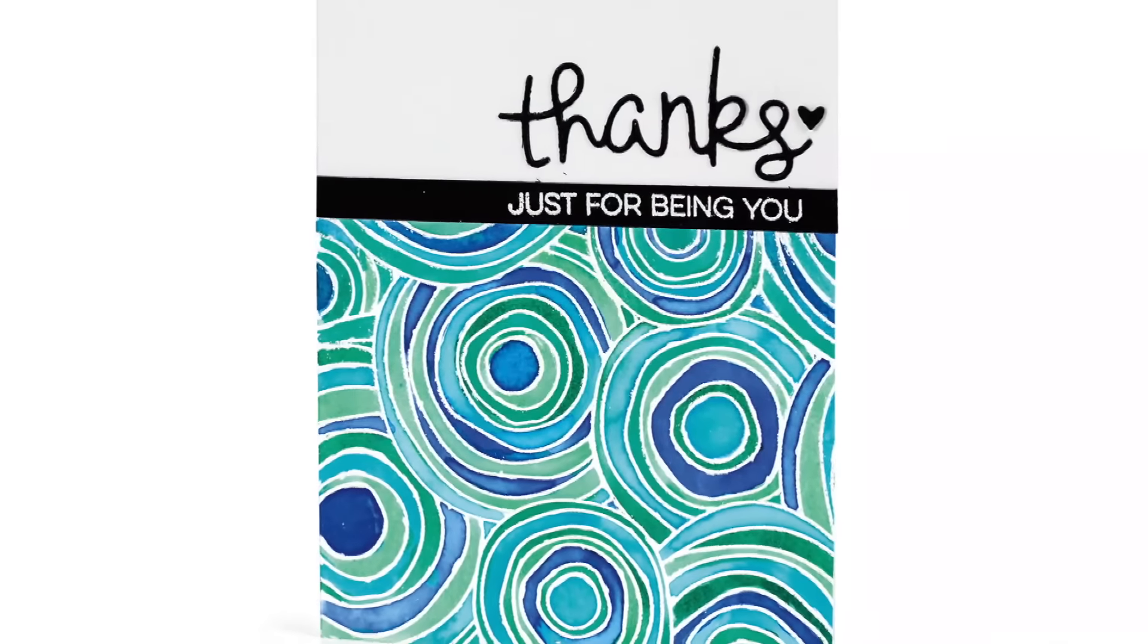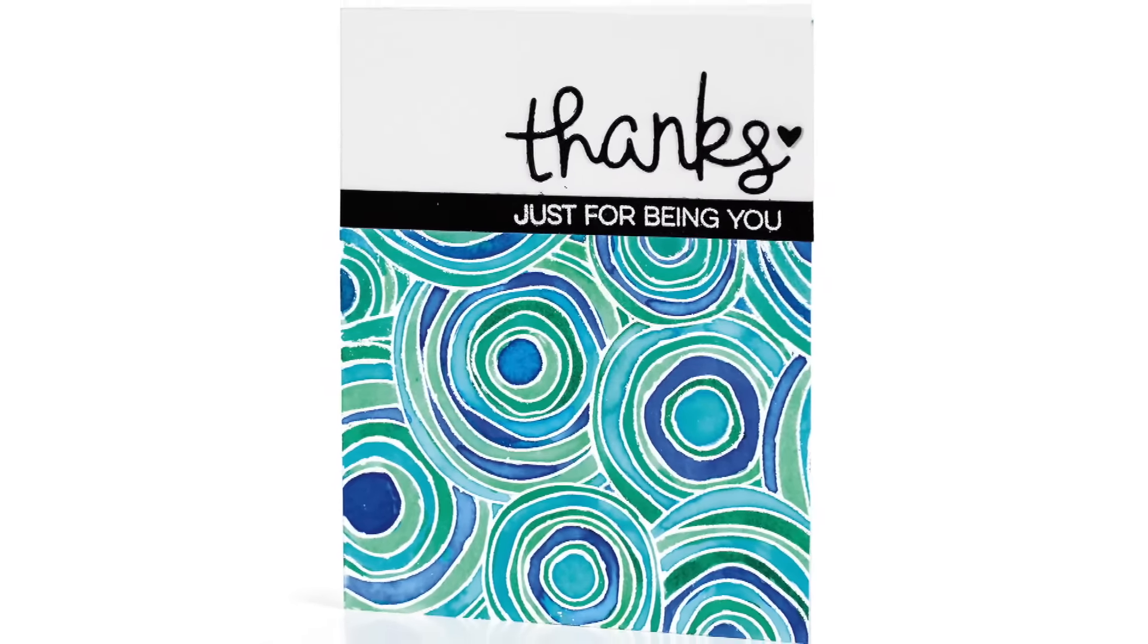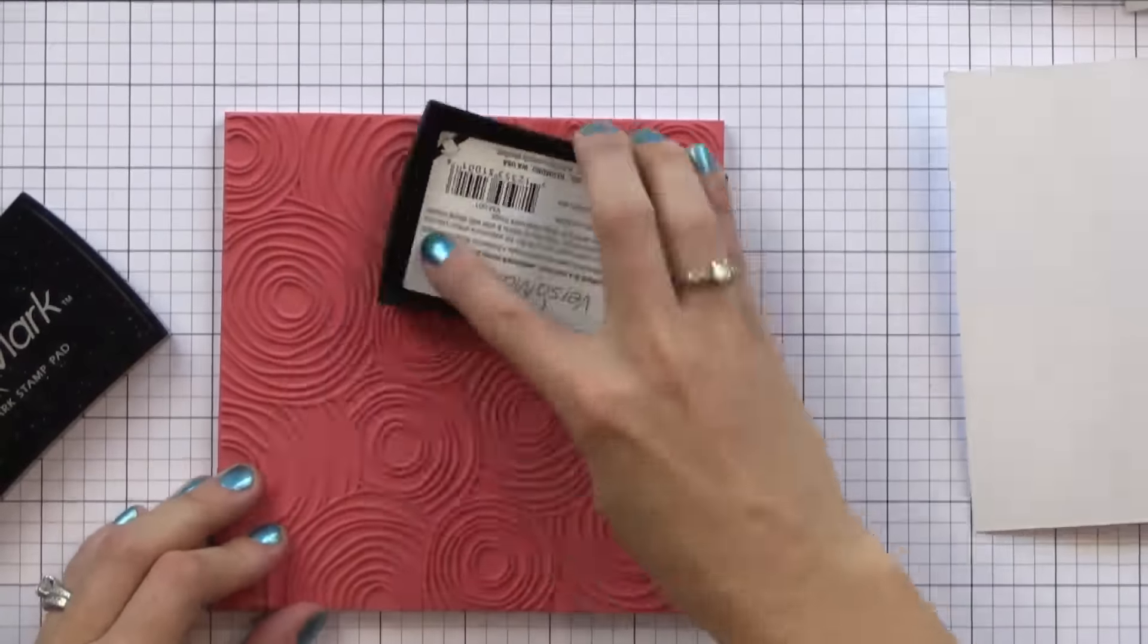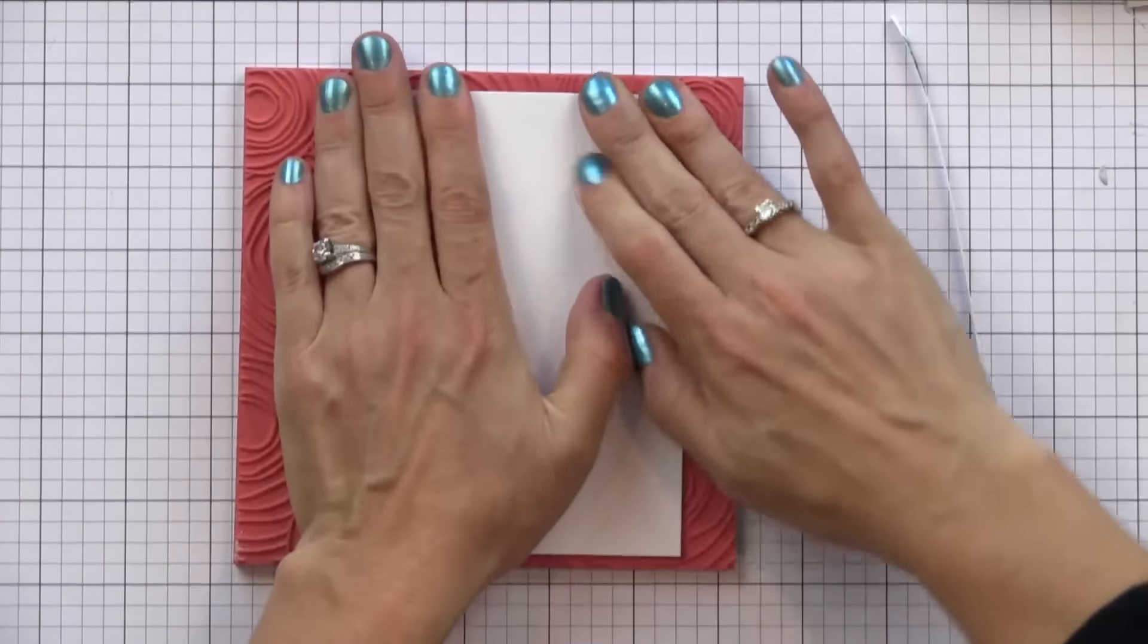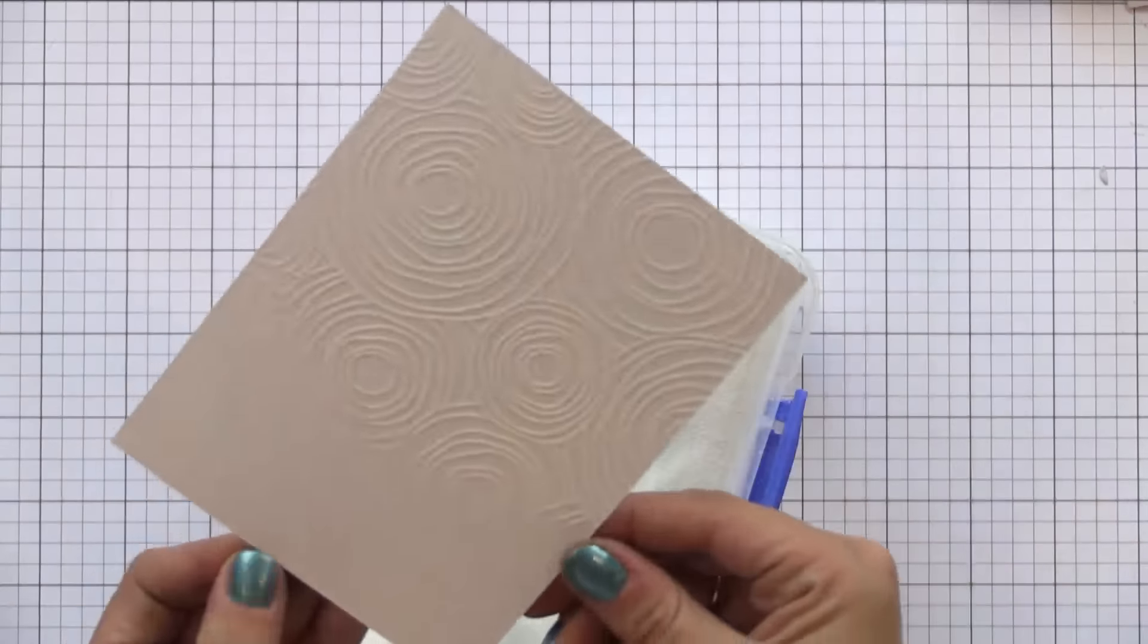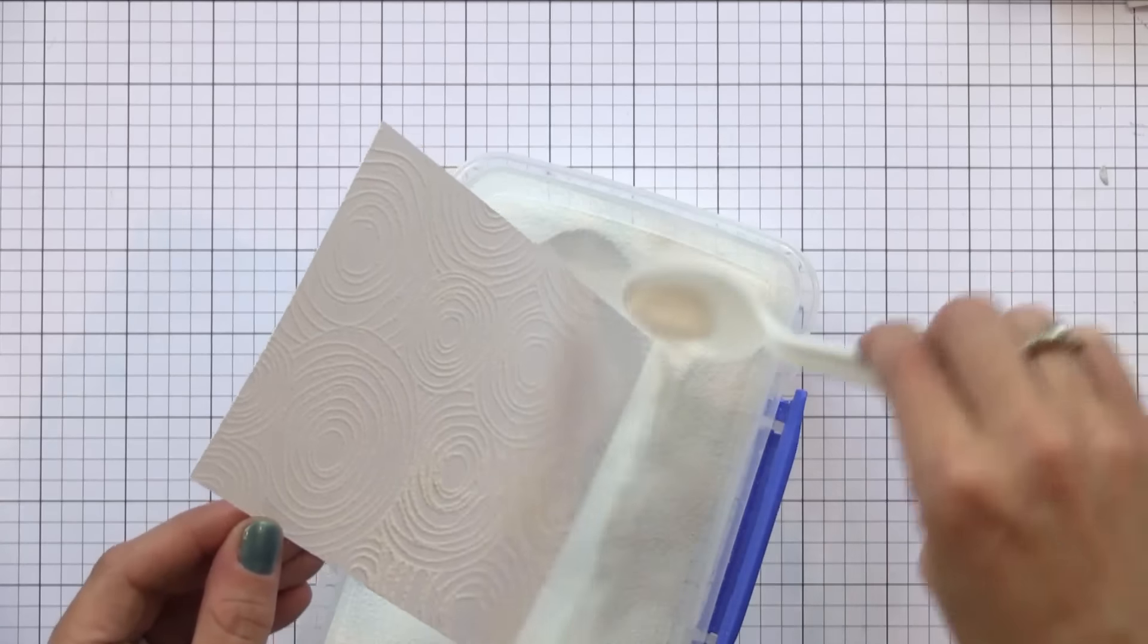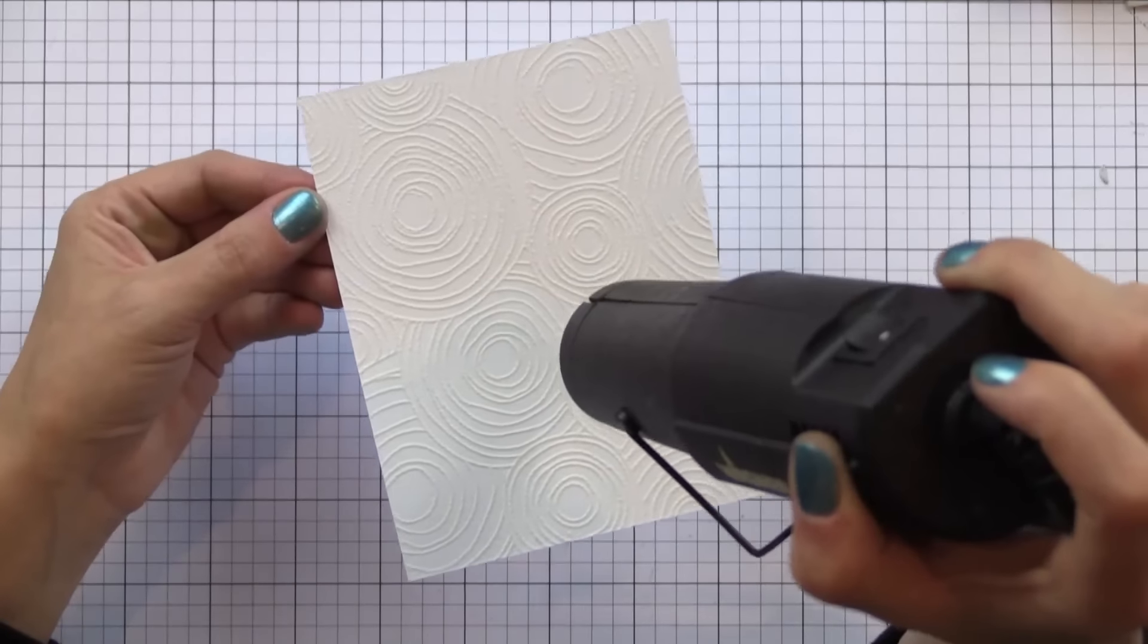Now it's time for our second technique where I use kind of a watercolor to fill in the areas on a background stamp. So I have this gorgeous background stamp from Simon Says Stamp. I'm going to go ahead and white heat emboss it onto some watercolor paper. I'm using watercolor paper since I plan to do a watercolor technique on it and it'll give better results. Adding that white embossing powder, tapping it off, and then heating it with my heat gun.